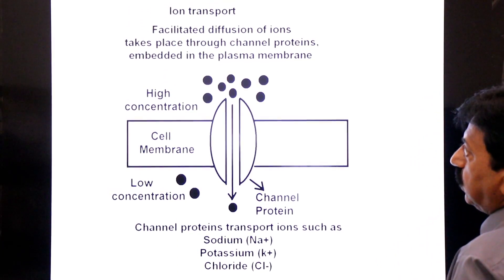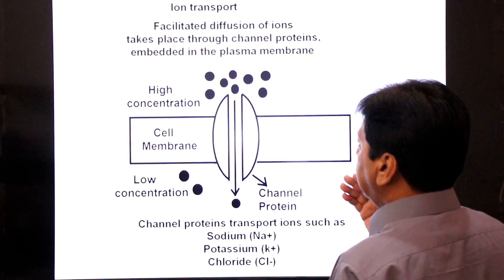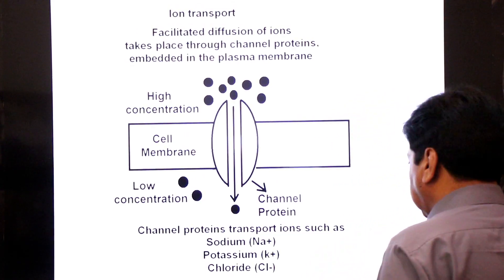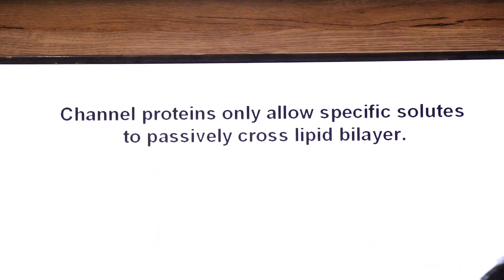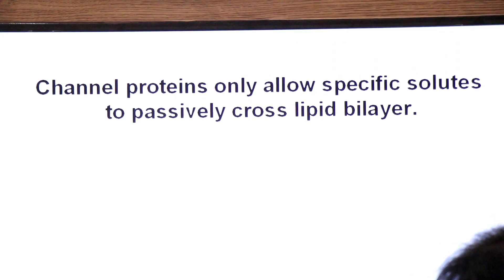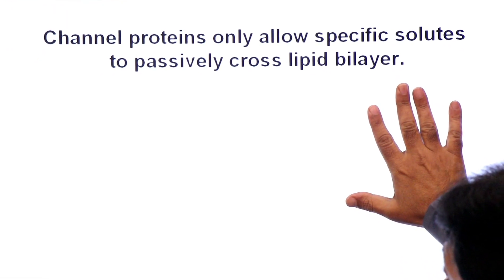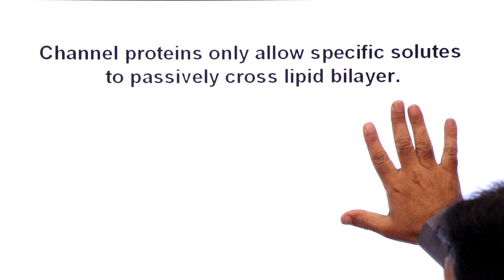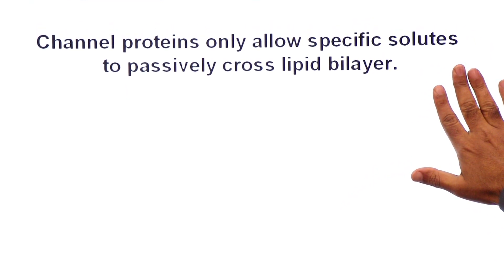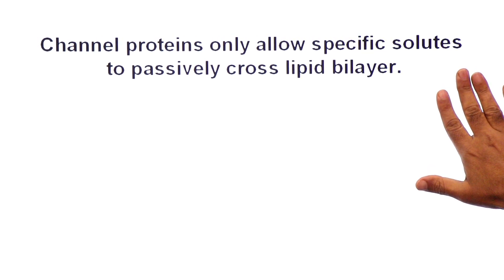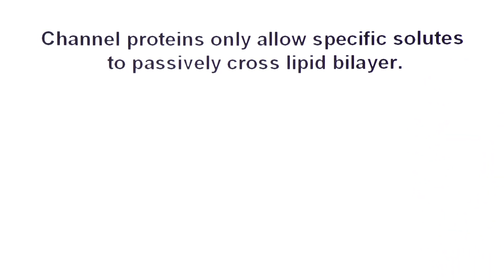So there are two examples of facilitated diffusion. Now we move to osmosis. Channel proteins only allow specific solutes to passively cross the lipid bilayer. Every channel protein has a specific shape — for example, a potassium channel protein will not allow glucose to cross.